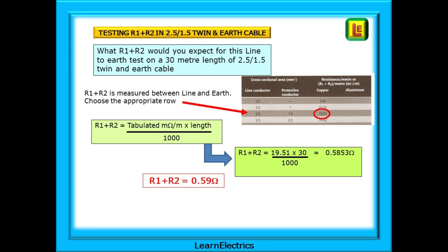The resistance, the R1 plus R2 in this case, is the tabulated milli-ohms multiplied by the length and then divided by 1,000 to convert it back into ohms, what we should see on our test meter. So 19.51 milli-ohms multiplied by 30 meters and divided by 1,000 gives us 0.5853 ohms. Rounding up, we can say that R1 plus R2 is 0.59 ohms.